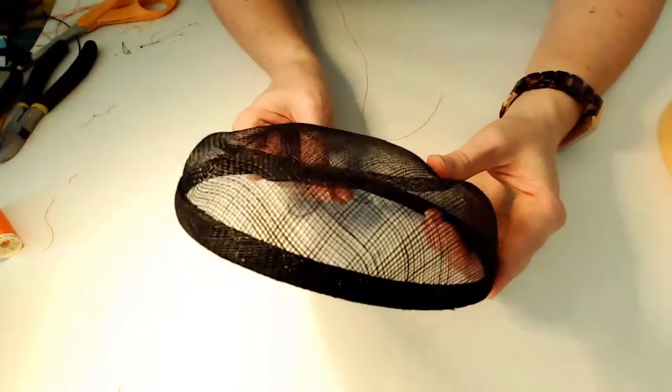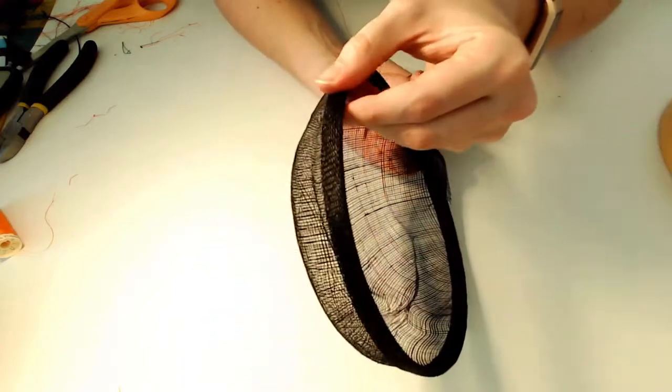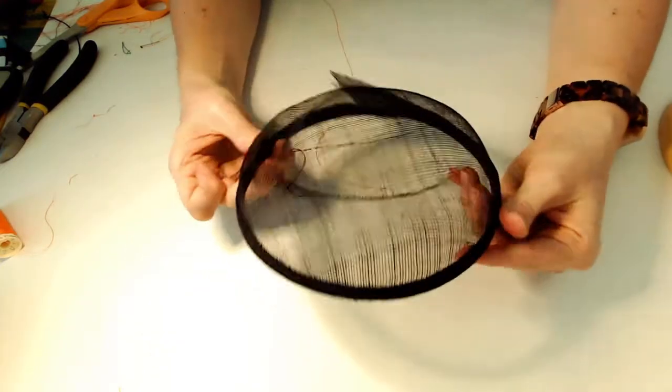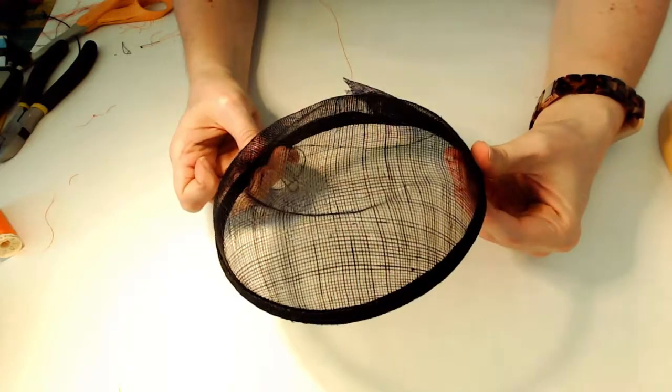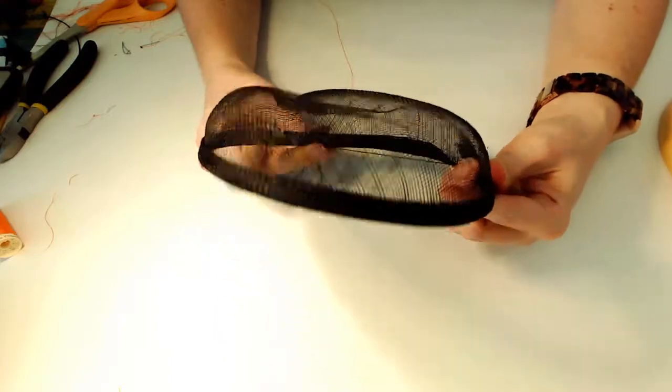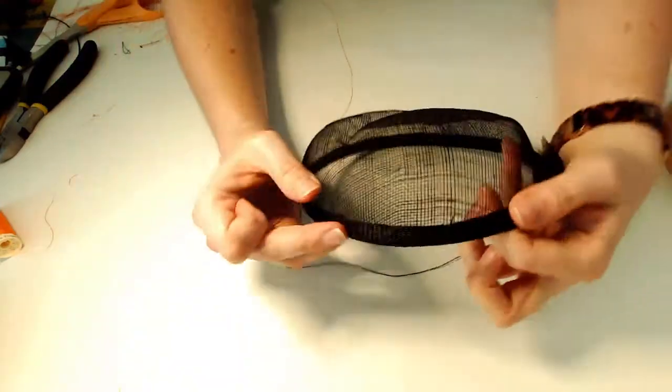So now I have all of this binding stitched on, all except the very back. And you can see the hat starting to look much better now that the binding is on. It's not as fragile and it just looks cleaner now. And you can't see the stitching at all.